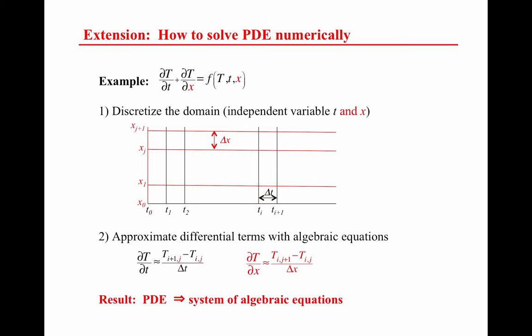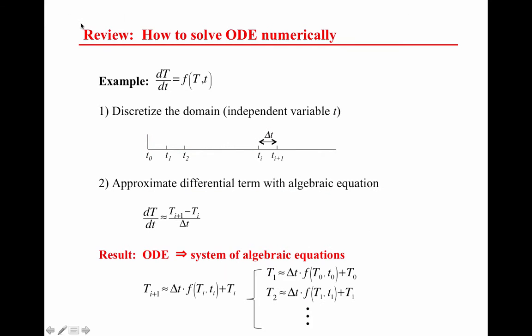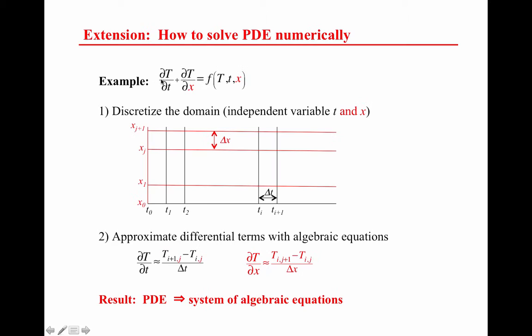Just because people in this class won't have seen that funny D — that's called del. You pronounce that del capital T, del little t. That's the kind of derivative that Professor Hertzberg was saying takes the derivative only with respect to that one variable; all the other variables get carried along and treated as constants. Whereas ODEs have that regular looking D, PDEs now have that del representing the partial derivative, saying that we have more than one independent variable.